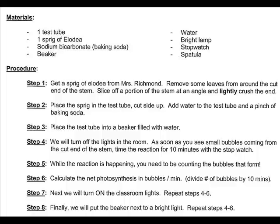You will get a sprig of the plant from me in a test tube. Then you will add a little bit of baking soda to the test tube, fill the test tube with water, mix up the baking soda, put the test tube in a beaker full of water, and then subject the test tube and beaker apparatus to various lighting conditions. Be sure that you record your data and then repeat the steps so that you can test all of the different lighting conditions.